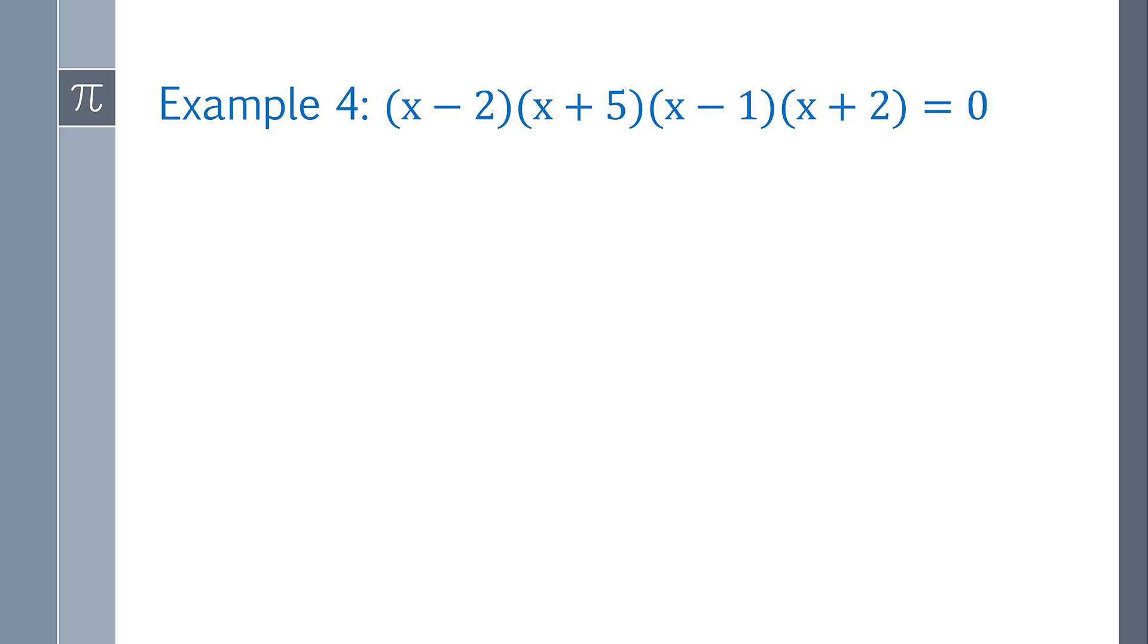Now this last one, I know I said that the zero product principle is a times b equals 0, but it actually can be extended to as many variables as you want. This could be a times b times c times d times e equals 0. And you can assume that a equals 0, b equals 0, c equals 0, d equals 0, e equals 0, and so on and so forth. So I have a string of factors here, and I can assume each one of these factors equals 0.